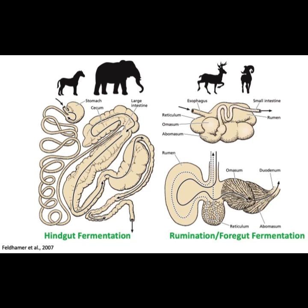While we do not know exactly what triceratops's digestive system looked like, we do know it was most likely a hindgut fermentator, which uses microorganisms to break down plant matter in the cecum and colon — much like horses and elephants — rather than using a multi-chambered stomach to break down plant matter like deer and cattle.